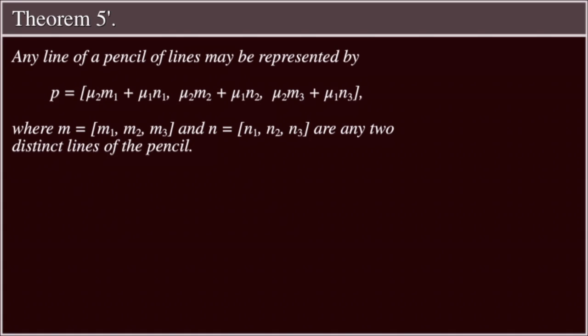Theorem 5 Prime: Any line of a pencil of lines may be represented by p equal to (μ₂m₁ + μ₁n₁, μ₂m₂ + μ₁n₂, μ₂m₃ + μ₁n₃), where M = (m₁, m₂, m₃) and N = (n₁, n₂, n₃) are any two distinct lines of the pencil.